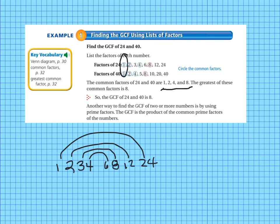Because 1 is in both lists, 2 is in both lists, 4 is in both lists, and 8 is in both lists. The greatest of these common factors is 8. So the greatest common factor of 24 and 40 is 8.